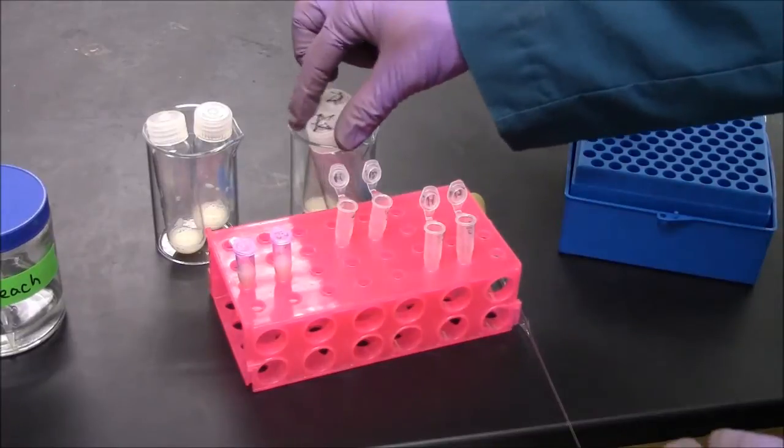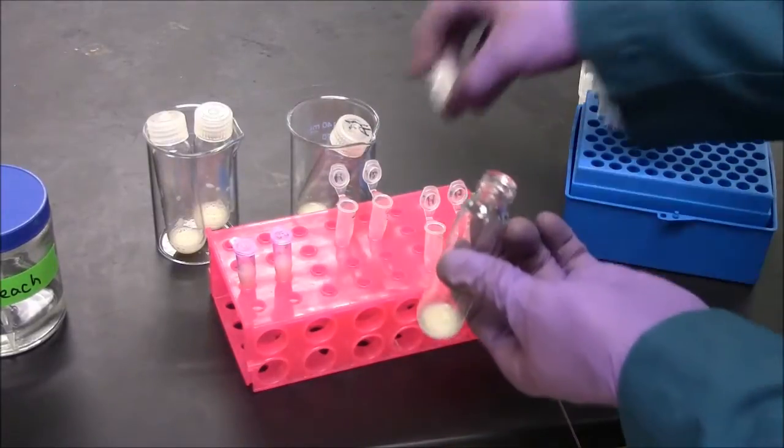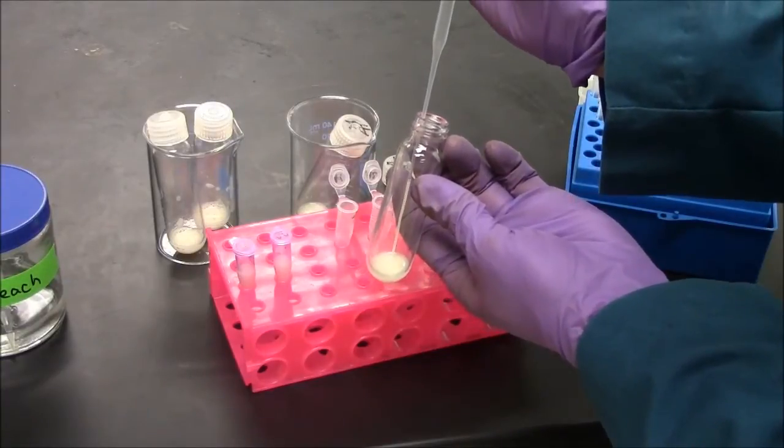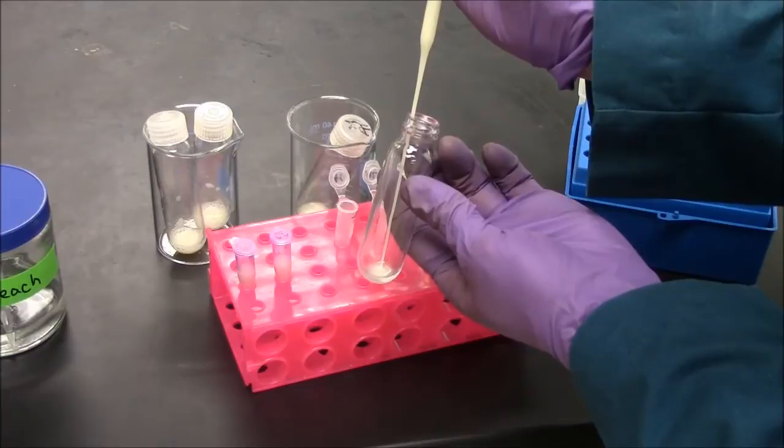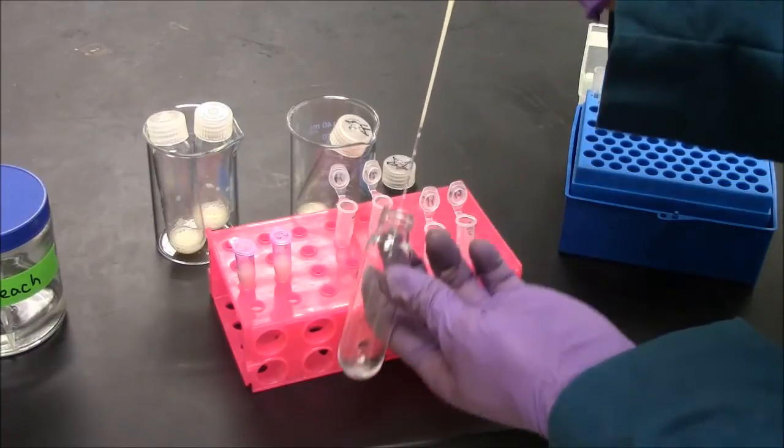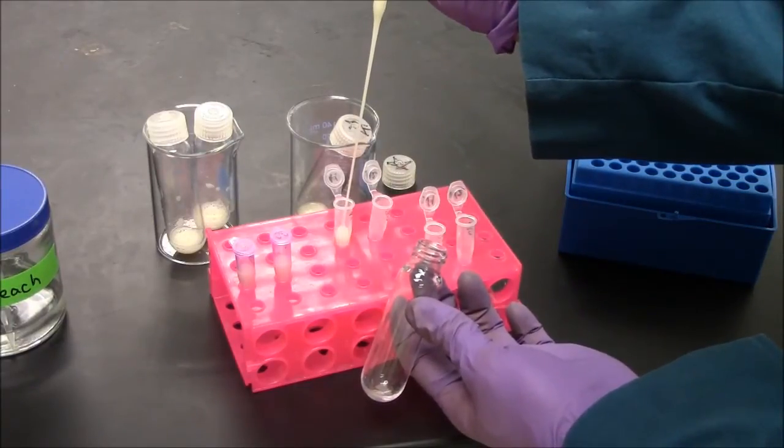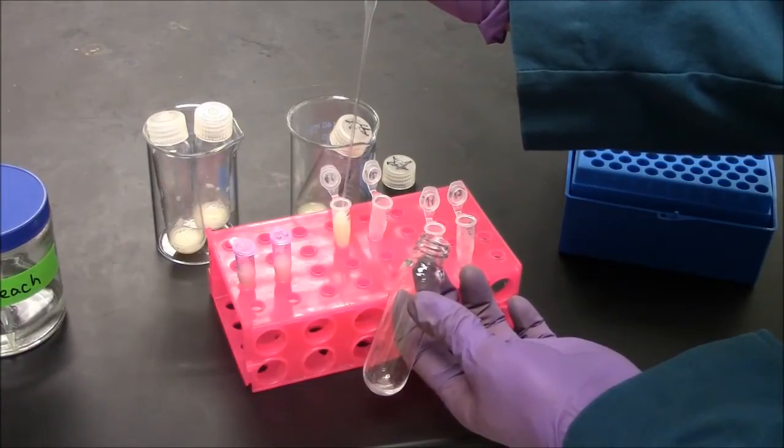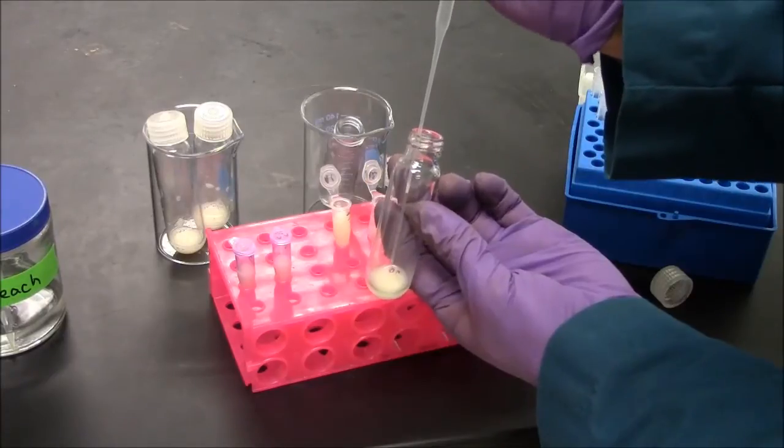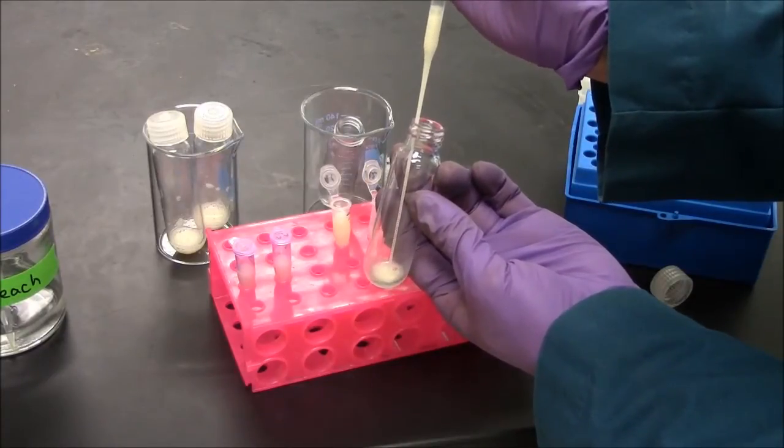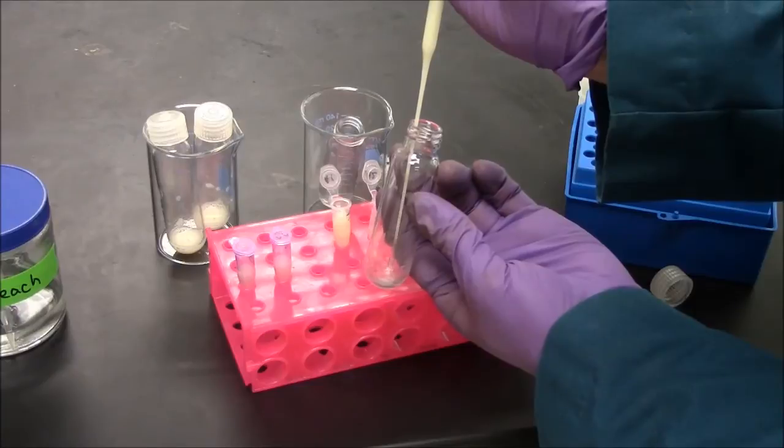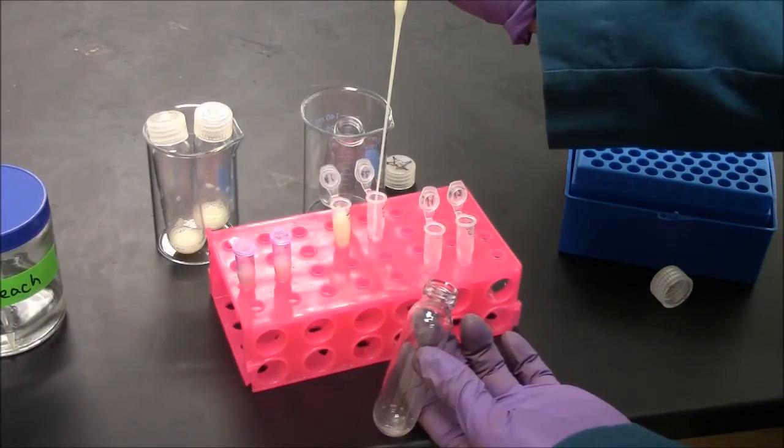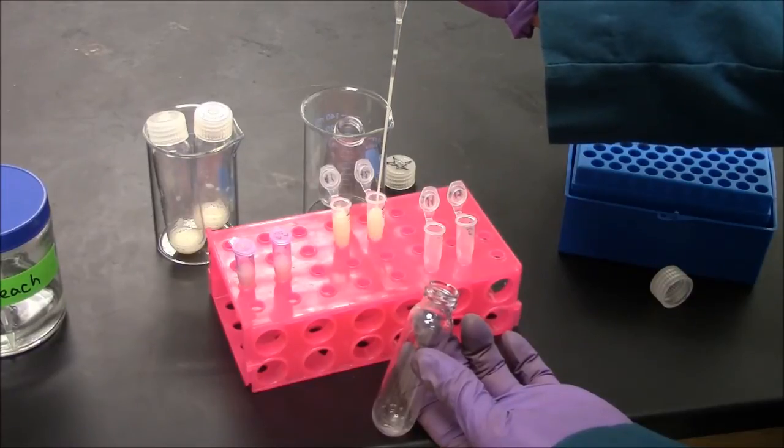I've pre-weighed these Eppendorf tubes and I'm transferring the cells to the tubes with a Pasteur pipette. Best to get everything in one pipette. These Eppendorf tubes have a maximum capacity of 1.5 milliliters. So we're putting in maybe 1.1 or 1.2 if you include the volume of the cells.